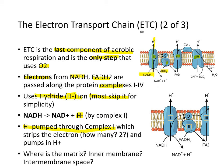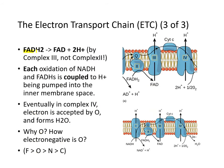Complex one strips the electrons from the hydride ion and pumps protons into the inter-membrane space. The matrix is below, and the inter-membrane space is outside the inner membrane. FADH2 becomes FAD²⁺ by complex 2. Each oxidation of NADH and FADH2 is coupled to protons being pumped into the inter-membrane space. Eventually in complex 4, electrons are accepted by oxygen.